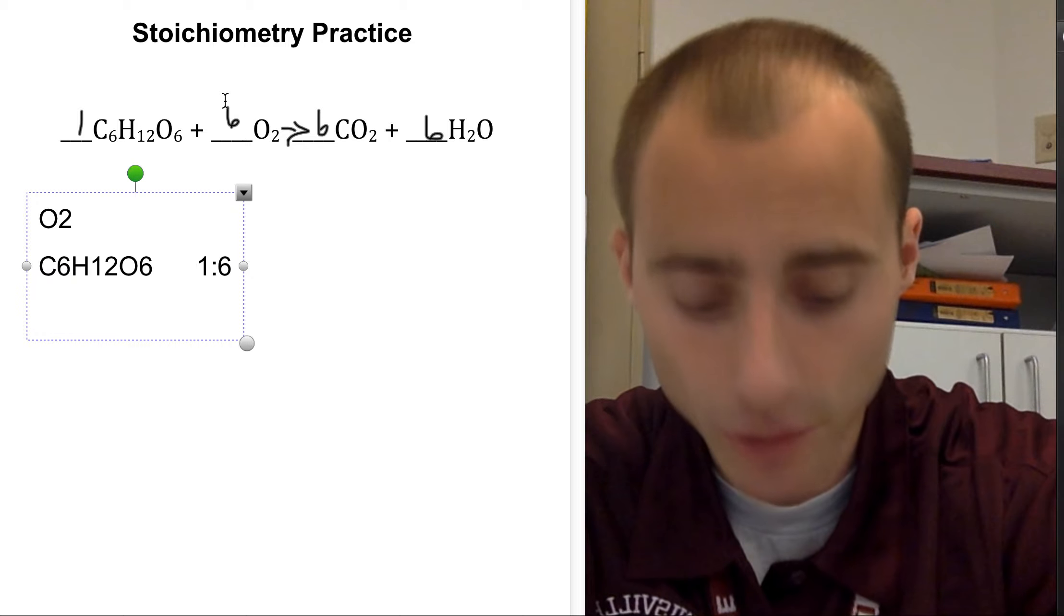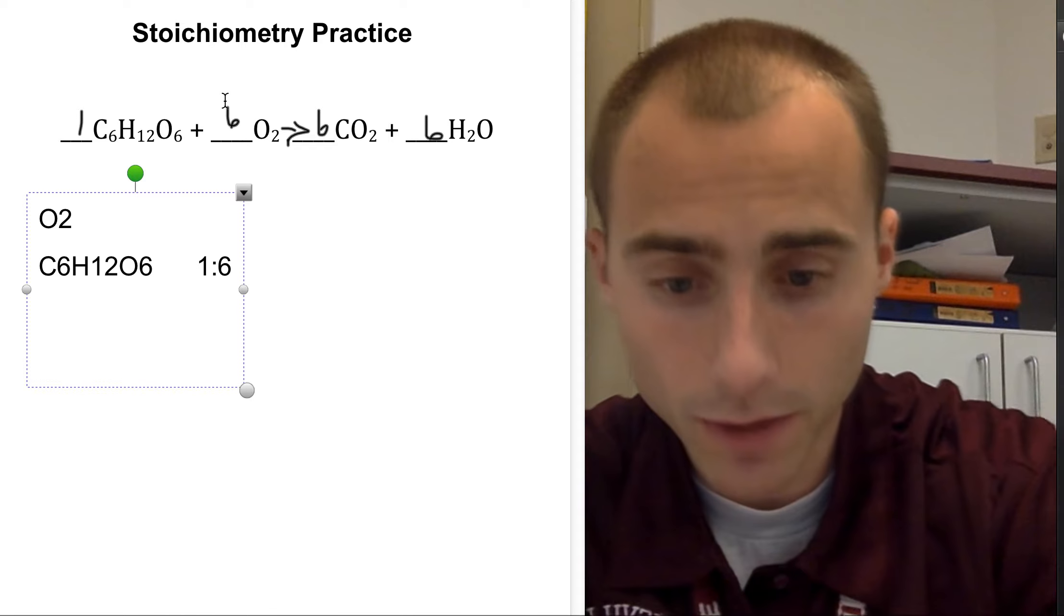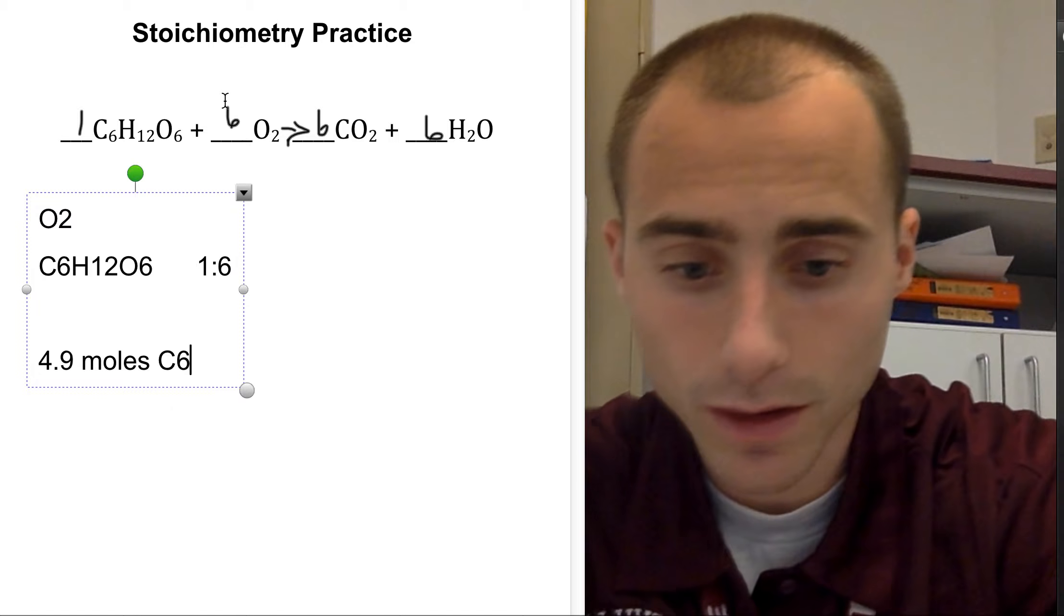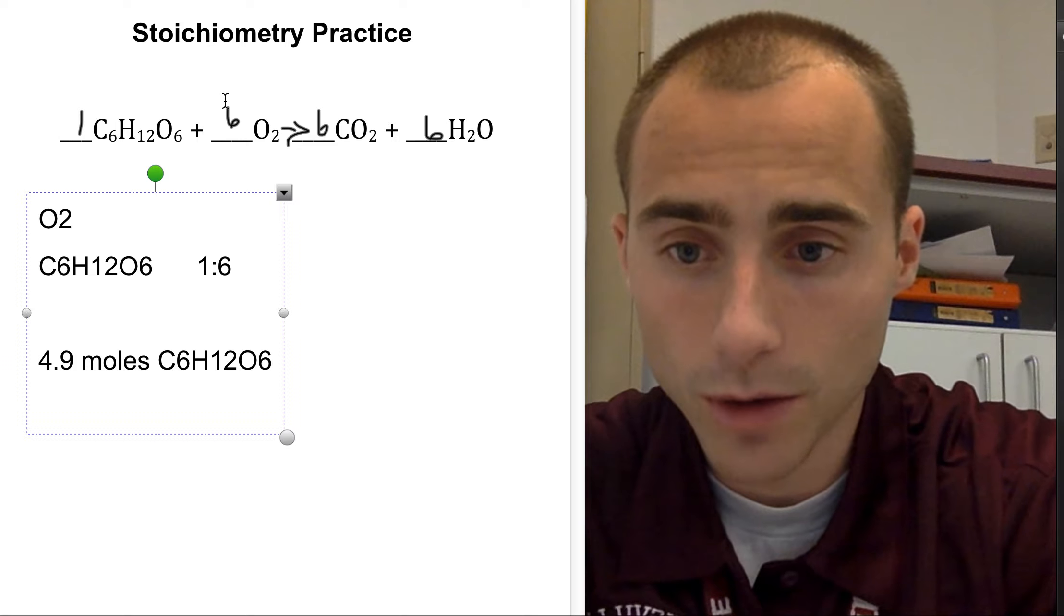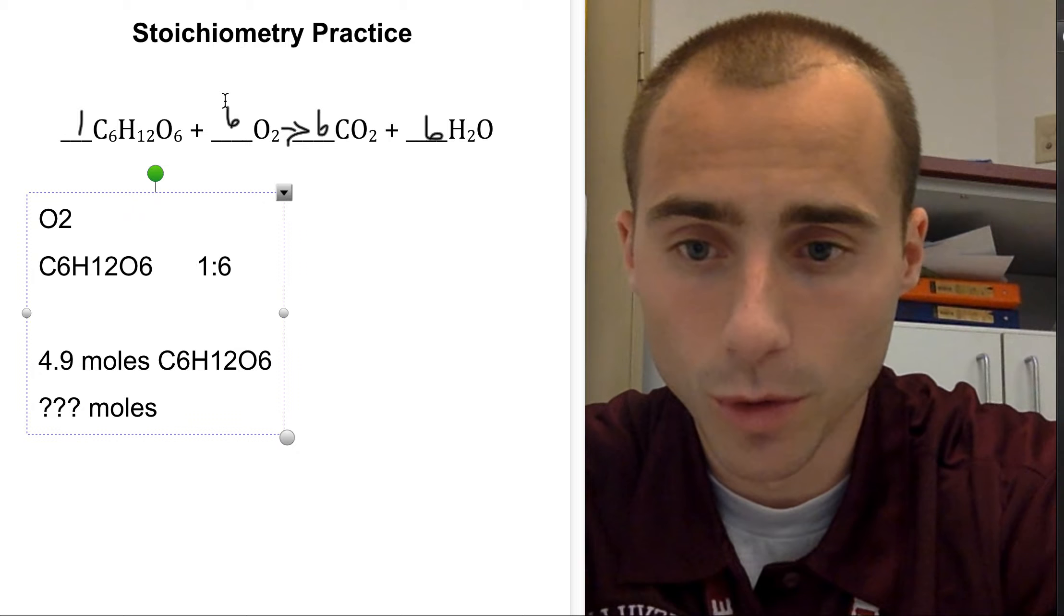Then we set up our new ratio based on what we're given. We are given 4.9 moles of C6H12O6, and we don't know the moles of O2, right?